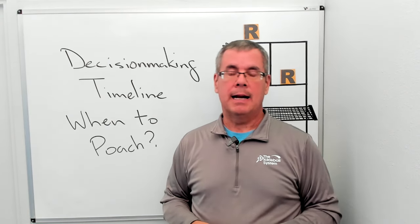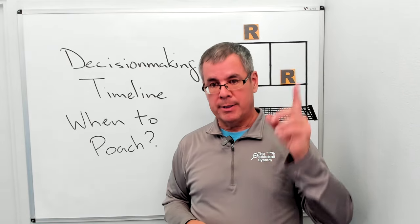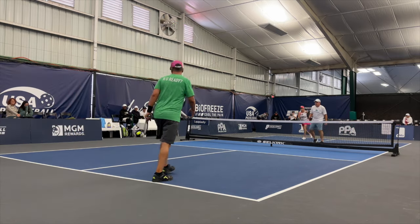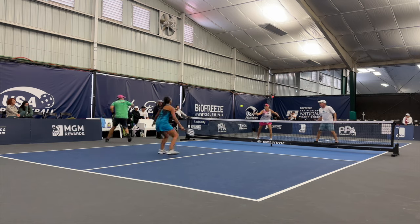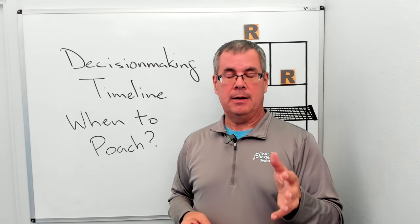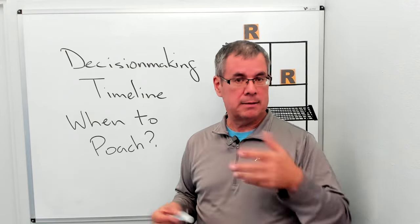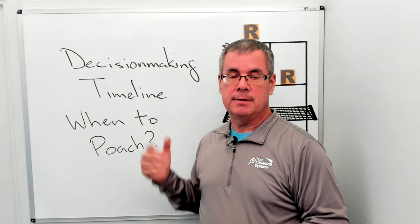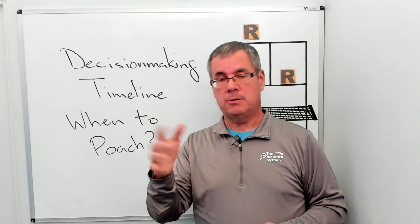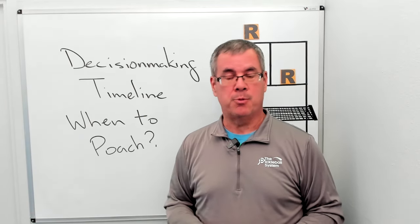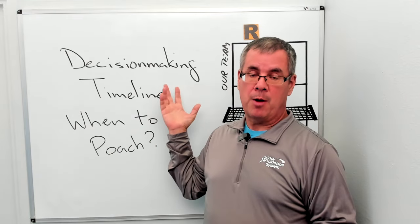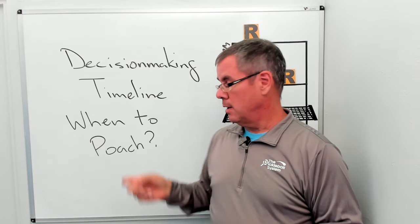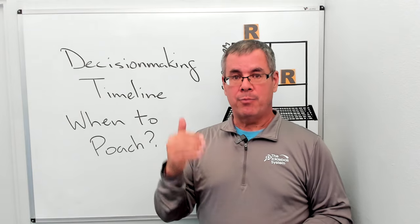This analysis is in response to several comments we got on a video about a poach play I did at the 2023 nationals — I'll put a link up here. In that match we showed a poach gone wrong, and a lot of the comments were based on a misunderstanding of the decision-making timeline. No criticism of the commenters — this is just part of the growth process — but they didn't really understand how the decision-making timeline works, and that's what we're addressing in this video.